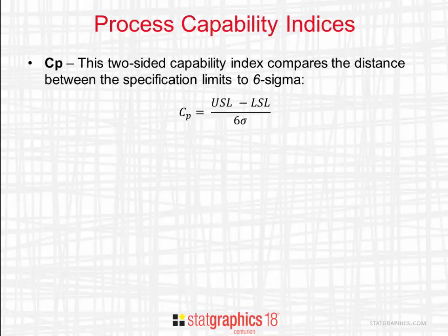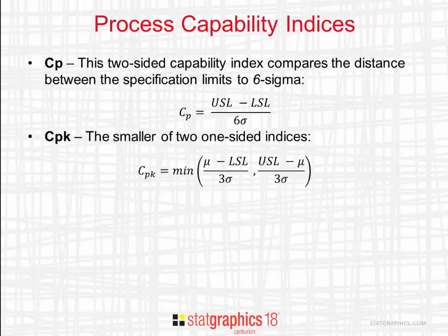A second popular index is called CPK. CPK is the smaller of two one-sided indices. It's the smaller of the mean minus the lower specification limit divided by three sigma and the upper specification limit minus the mean divided by three sigma. It may also be used if you have only a single specification limit.